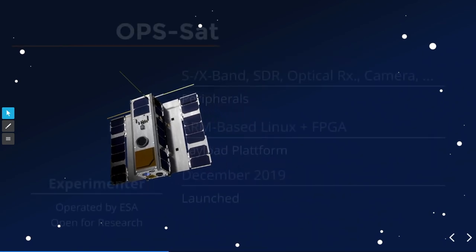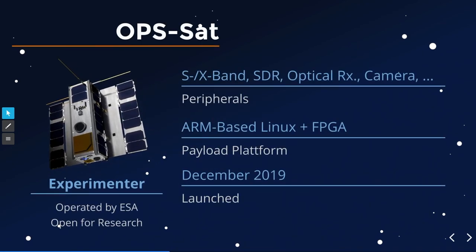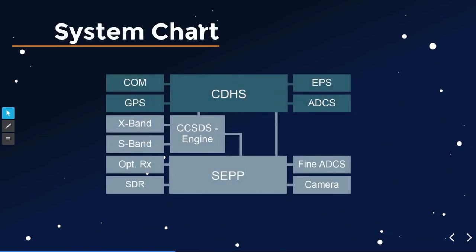Let's jump into the system analysis of ESA's OPS-SAT. It's an experimental satellite operated by ESA and pretty much open for research — everybody can go on GitHub, download their Java framework, write an experiment, and send it to ESA with a description. After a code review, they might upload it to the satellite. It has many peripherals including S-band, X-band, SDR, optical receiver, and camera. The payload is ARM-based Linux plus an FPGA. It was launched in 2019. The system chart has the bus system — communications, CDHS, GPS — in the upper part, and the payload in the lower part.